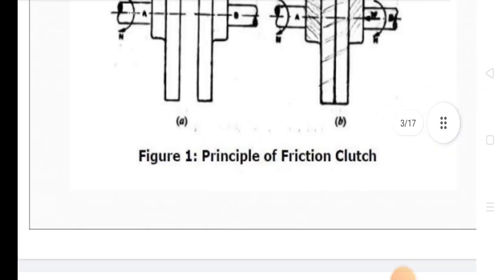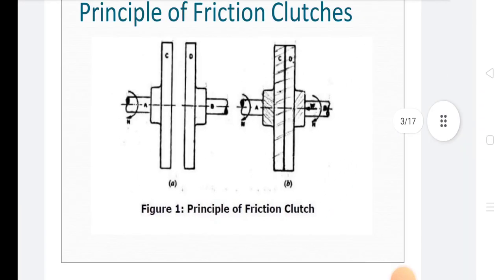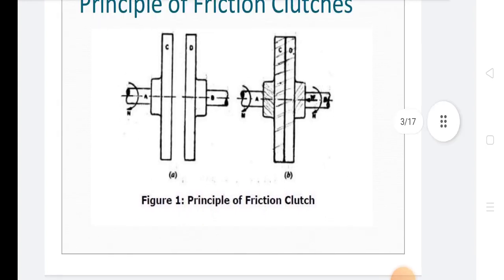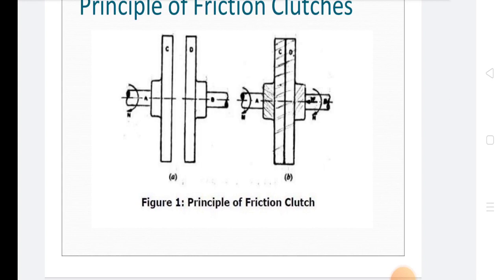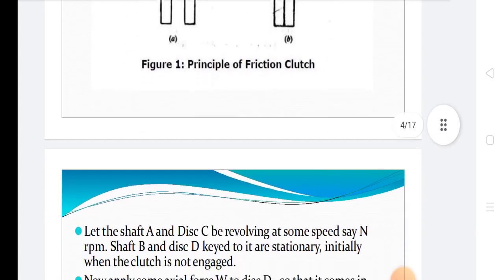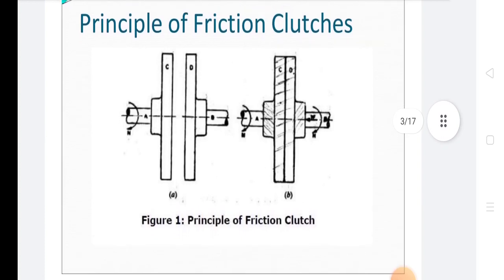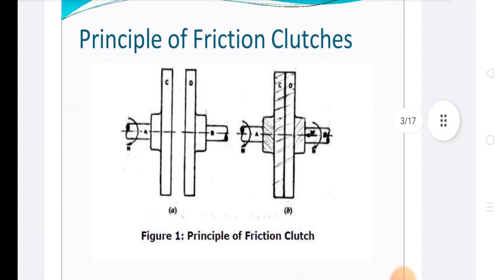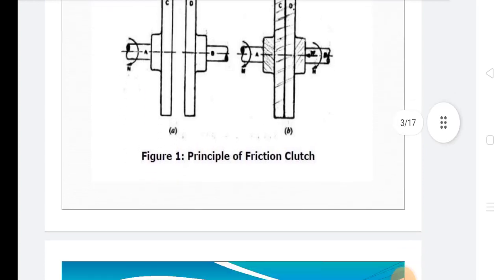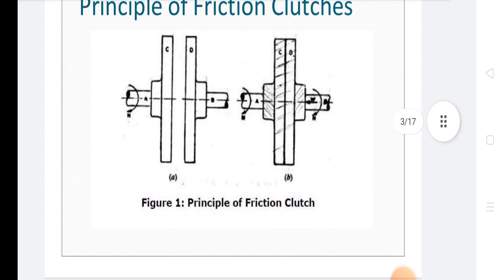In the diagram, there are components labeled A, B, C, and D showing the engaged and disengaged positions of the clutch. Now we will discuss what each component represents: what is A, what is C, what is B, and what is D.